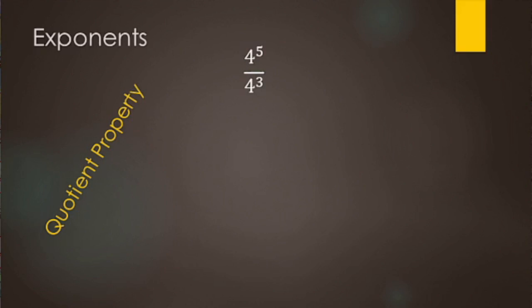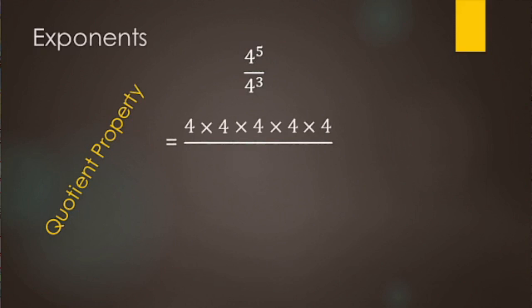Let's look at why the quotient property works. Here we have four to the fifth over four to the third. This says you have five fours being multiplied in the numerator, and in the denominator we're going to have three fours being multiplied.